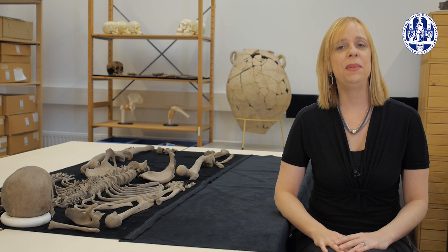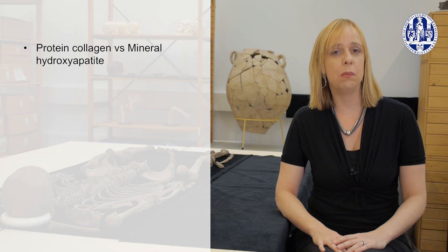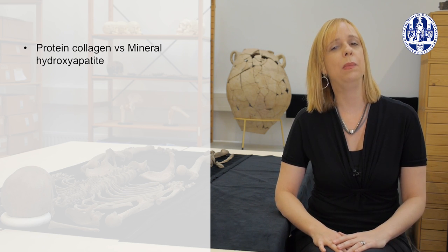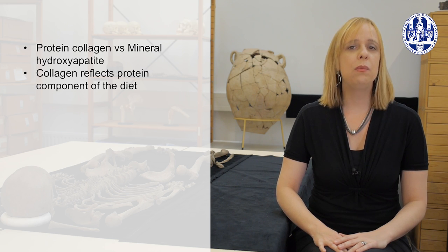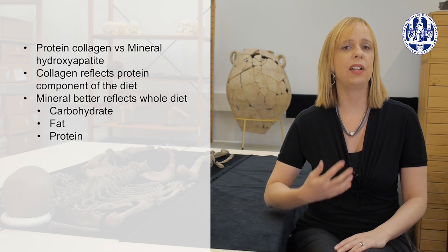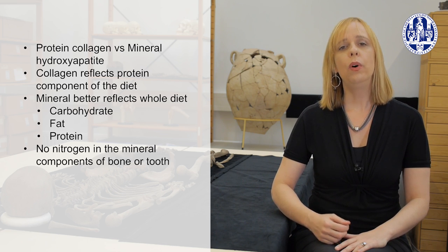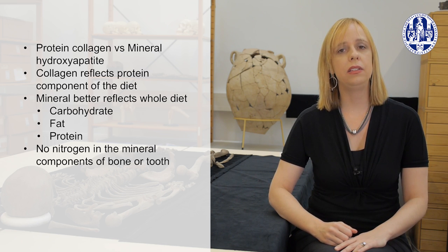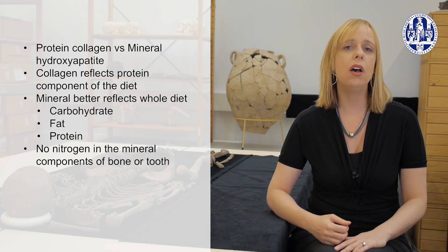When we conduct stable isotope analysis, osteoarchaeologists have to think about what tissue to use to best answer the questions in which we are interested. If we use bone, we can look at the protein component, the collagen, or the mineral component, the hydroxyapatite. Research has shown that the collagen mostly reflects the protein component of one's diet, whereas the hydroxyapatite reflects whole diet, including carbohydrates, fat, and protein. One unfortunate reality of stable isotope analyses of the mineral component is that there's no nitrogen in it, so we cannot measure that ratio.